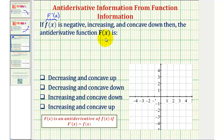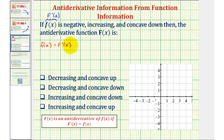Because big F of x is the antiderivative of f of x, its derivative equals small f of x. We're told that f of x is negative, which means big F prime of x is negative. The sign of the first derivative indicates whether a function is increasing or decreasing, so because big F prime of x is negative, big F of x would have to be decreasing.